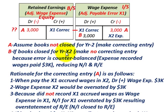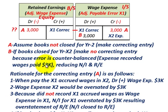For case B, if the books are closed for year X2, you make no correcting entry because the error is counterbalanced. The $3,000 accrued in year X1 will actually be paid in year X2, so it goes into wage expense on the income statement in X2, reducing net income and retained earnings at that point.